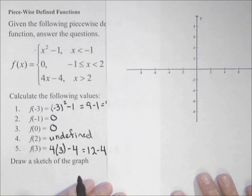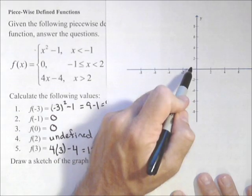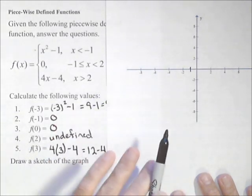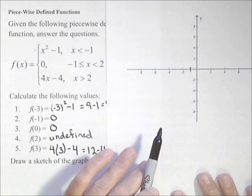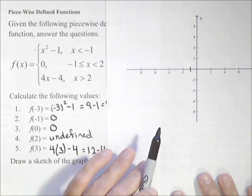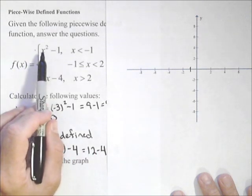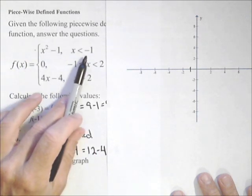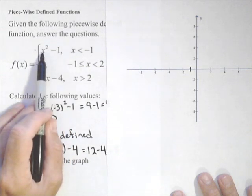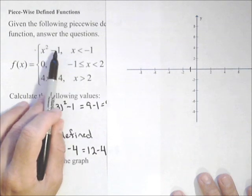So, for x less than negative one, negative one would be right here, so now I'm to the left. The graph looks like x squared minus one. Now, at negative one, and you always want to find out what's going on at the endpoint. At negative one, if I were to plug negative one into here, I get negative one squared, which is one, minus one, which is zero.